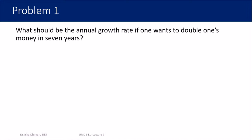Problem 1: What should be the annual growth rate if one wants to double one's money in seven years? An important point is that most of the time the problem won't tell you which model to use — you have to figure that out yourself by reading the statement. Since they're talking about doubling money, and the concept of doubling rate appears in the exponential growth model, we identify that we need to use the exponential growth model.